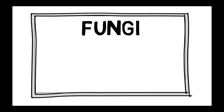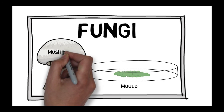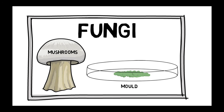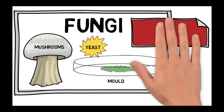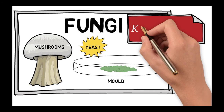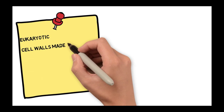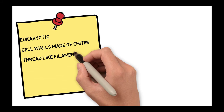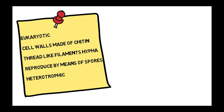On to the fungi kingdom. Examples of fungi include mould, mushrooms, and the all-important unicellular yeast, which is used in many biology practicals. The key features to be classified in the fungi kingdom are: fungal cells are eukaryotic, they have cell walls made of chitin, some produce thread-like filaments called hyphae, they reproduce by means of spores, and they are heterotrophic.